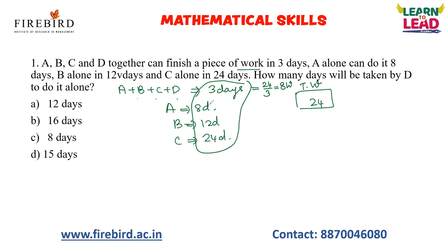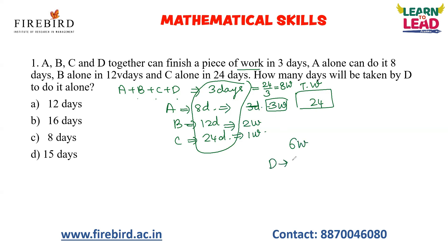The combined capacity of all four is eight units per day. For A: 24 divided by 8 gives three units per day. For B: 24 divided by 12 gives two units per day. For C: 24 divided by 24 gives one unit per day. If A, B, and C work together they complete six units per day. Since all four together complete eight units, the remaining two units per day must be done by D.